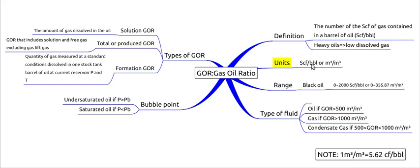For units, we have cubic foot per barrel or cubic meter per cubic meter. The range: GOR in black oil systems typically range from zero to approximately 2000 standard cubic foot per barrel.